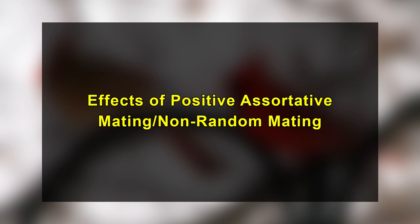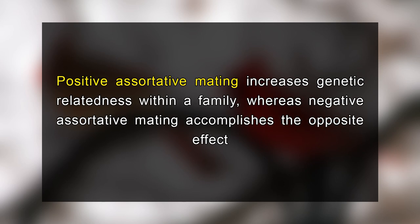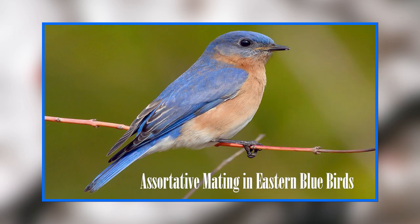Let's now discuss the effects of positive assortative mating. Assortative mating has reproductive consequences. Positive assortative mating increases genetic relatedness within a family, while negative assortative mating accomplishes the opposite effect. Either strategy may be employed depending on which maximizes fitness and enables individuals to pass on their genes to the next generation. In the case of eastern bluebirds, assortative mating for territorial aggression increases the probability of the parents obtaining and securing a nest site for their offspring, which in turn increases the likelihood of offspring survival and consequently individual fitness.